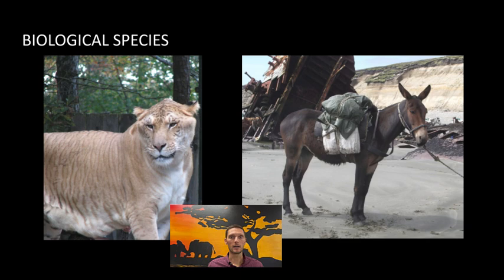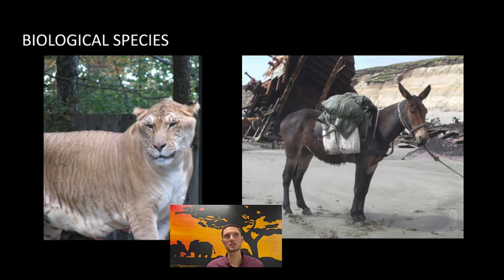Sometimes it's possible that species can intermix and produce offspring. A common example is a mule — a cross of a horse and a donkey. Scientists would generally say it's not its own species because the mule is sterile and not able to reproduce. A more fun example is a liger, a cross between a lion and a tiger. Ligers are also generally sterile. These hybrids — a mule or a liger — exist as organisms, but don't really fit the biological species concept because offspring are produced but they're not fertile.